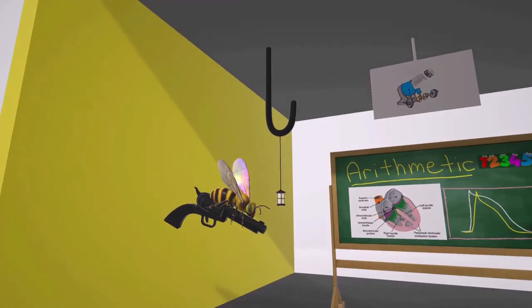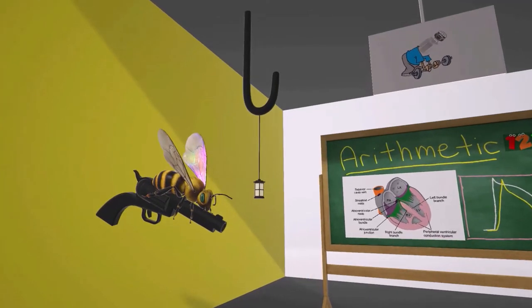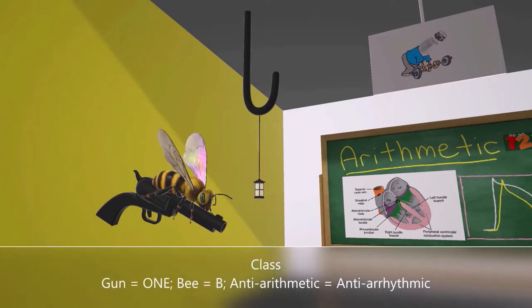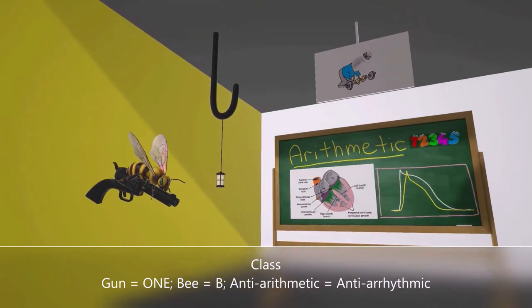We're going to talk about the anti-arrhythmics, specifically Class 1B, represented by this B over here with the gun. We'll call this the gun B, gun B for 1B. This B over here is hijacking the arithmetic class - he doesn't like arithmetic so he's terrorizing